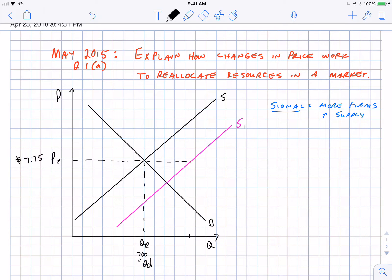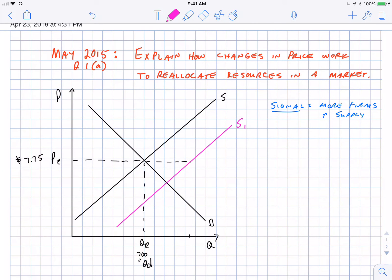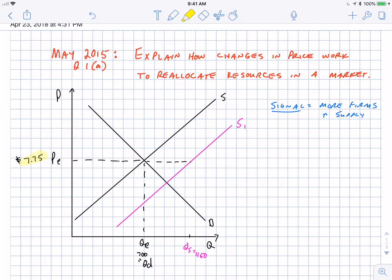This equilibrium quantity is where the demand curve intersects at that price, but the supply curve at this price intersects at a much higher level. So maybe $11.50. So quantity supplied equals $11.50. So at the original price of $7.75, at that original price, there is more quantity supplied than quantity demanded.